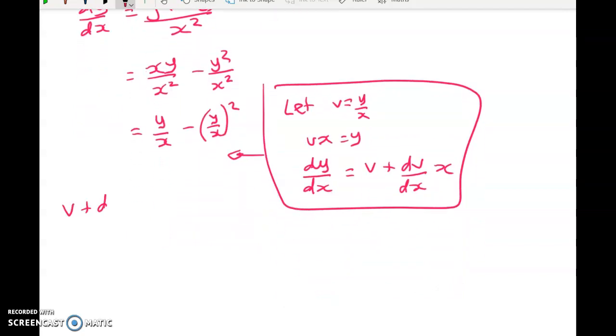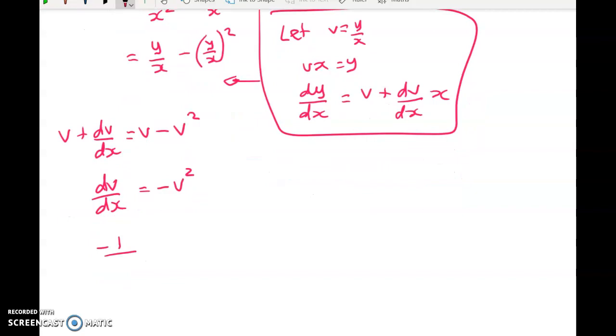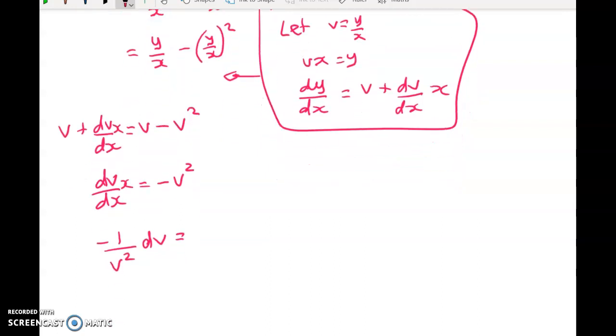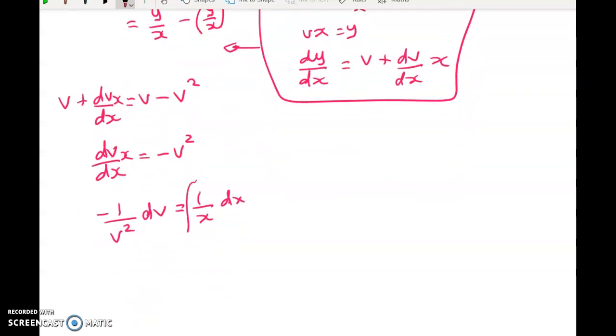So now we're going to take this and we're going to chuck it all back in here. So V plus dV by dx is equal to V minus V squared. dV by dx is a very simple equation, negative V squared. Separating the variables gives me negative one over V squared dV is equal to one over x dx. Now the integral of this, going very carefully, is simply V to the negative one.